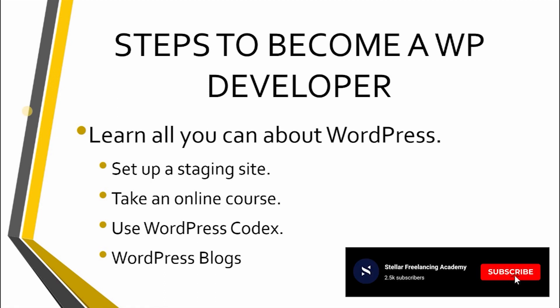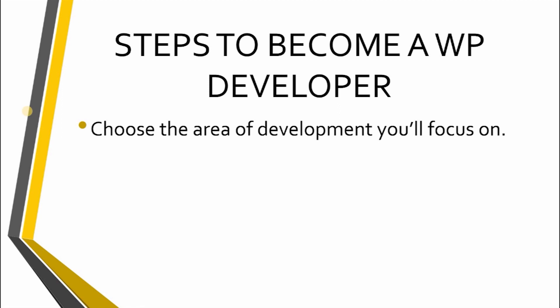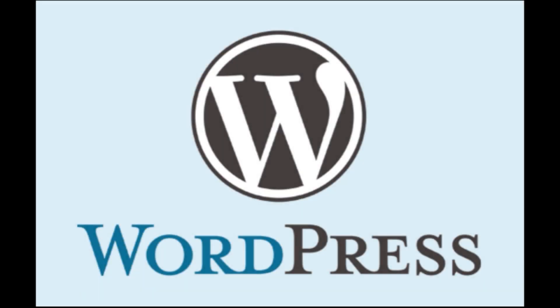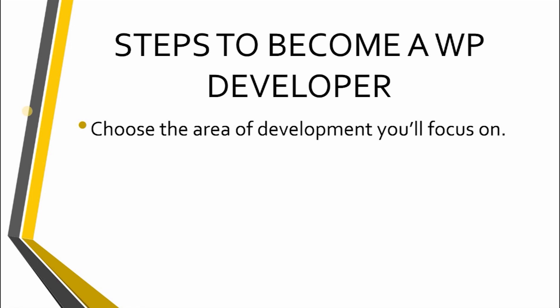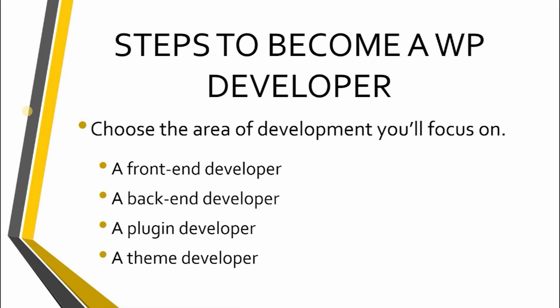After you've acquired a solid grounding in WordPress basics, you'll be in a much better position to tackle the question of how to become a WordPress developer. Choose the area of development you'll focus on. WordPress is renowned for being a broad, versatile, and constantly evolving CMS. This is good news for prospective developers as it means there are entry points that cater to a broad array of interests and skillsets. Although a strong technical knowledge is crucial, niches such as theme and plugin development also present opportunities to be creative. When becoming a WordPress developer, you can choose to become a front-end developer, a back-end developer, a plugin developer, or a theme developer.